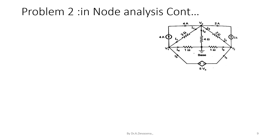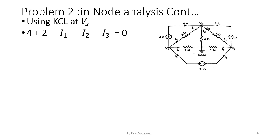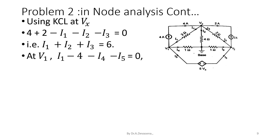Using Kirchhoff's Current Law at node V suffix AX, we have: the current source 4 amps is entering the node VX, and the current source 2 amps is also entering the node VX. The currents I1, I2, and I3 are leaving from the node VX. Therefore, 4 plus 2 minus I1 minus I2 minus I3 is equal to 0. That is, I1 plus I2 plus I3 is equal to 6.